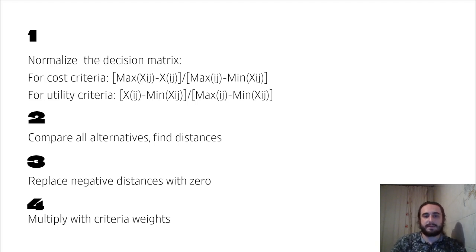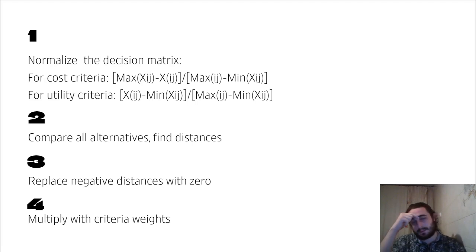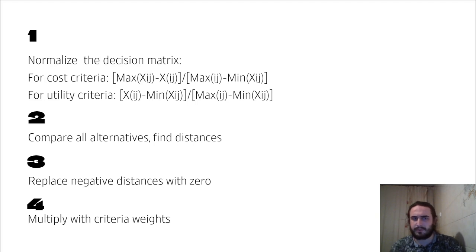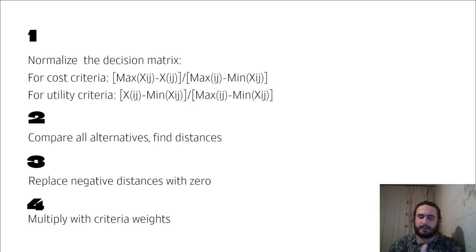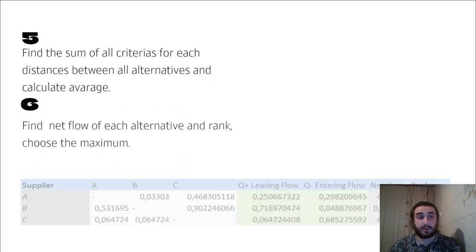We compare all alternatives and find the differences for each criterion between every pair. We may get values like minus 0.3 or similar negatives, but since this acts like a probability it cannot be negative — so we replace those values with zero. After this step we multiply the matrix by our criteria weights, which were calculated using AHP or given in the question.